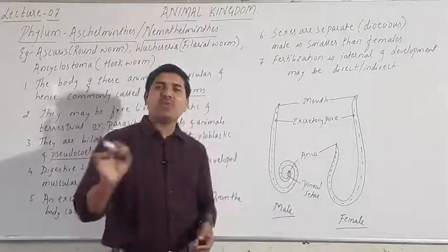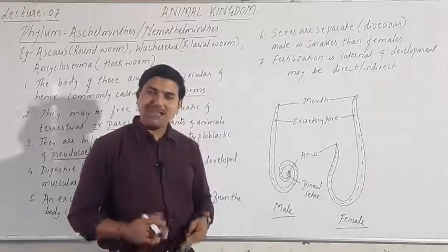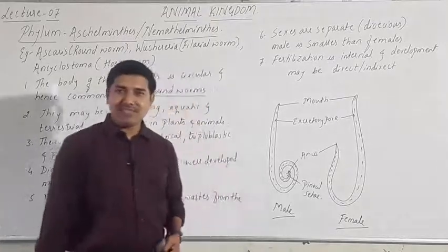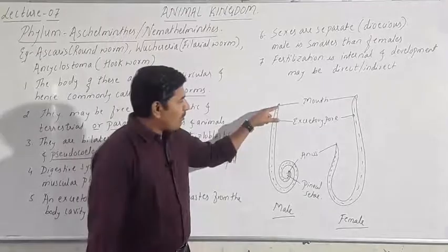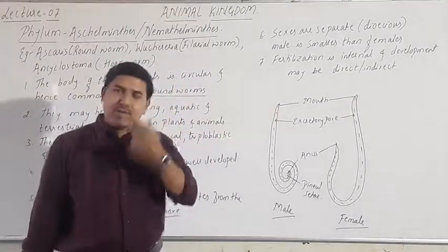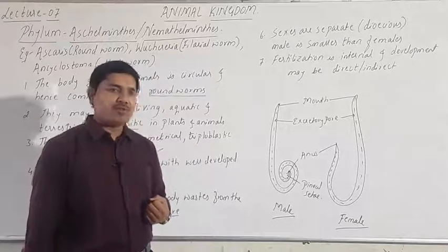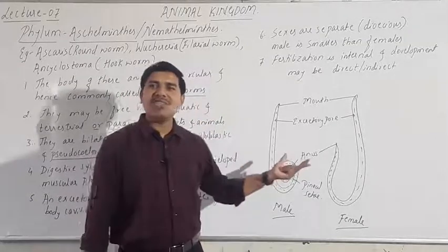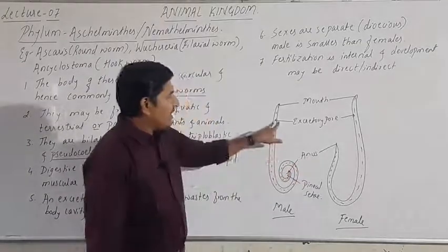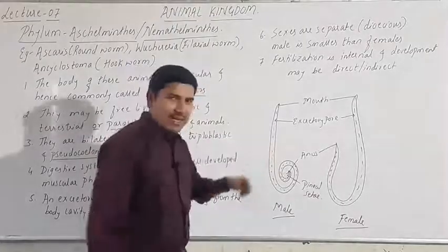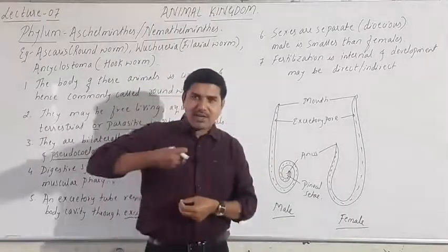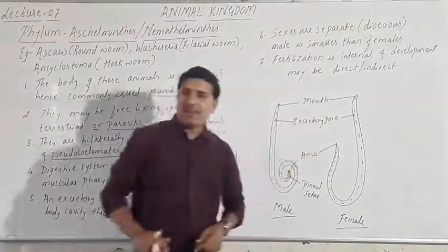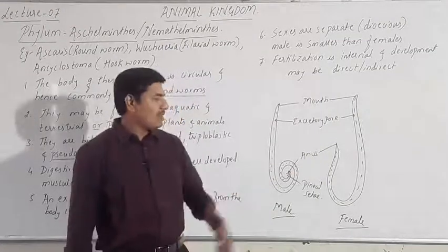Sexual dimorphism is well exhibited — males and females are two different animals. The mouth consists of a muscular pharynx so they can absorb and suck digested food. These are parasitic endoparasites. The excretory pore removes nitrogenous waste.